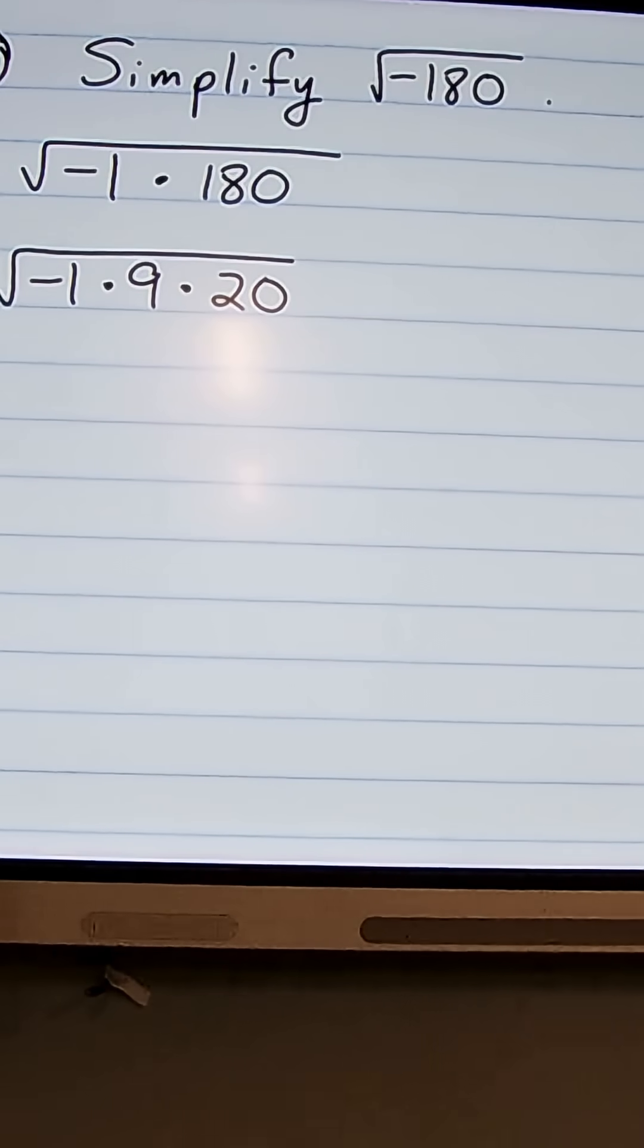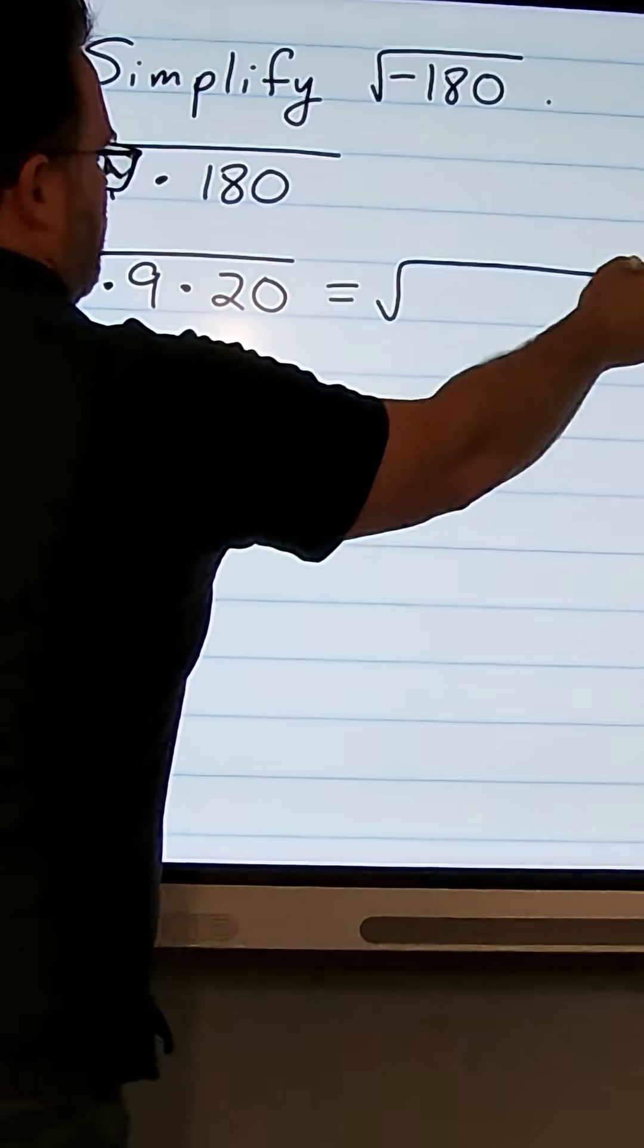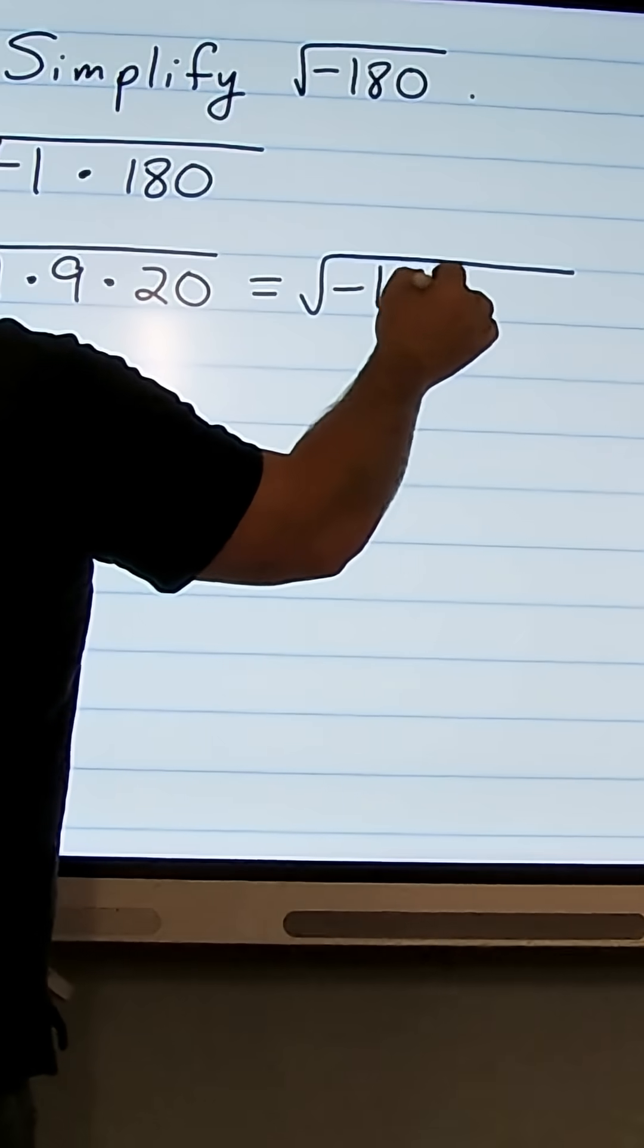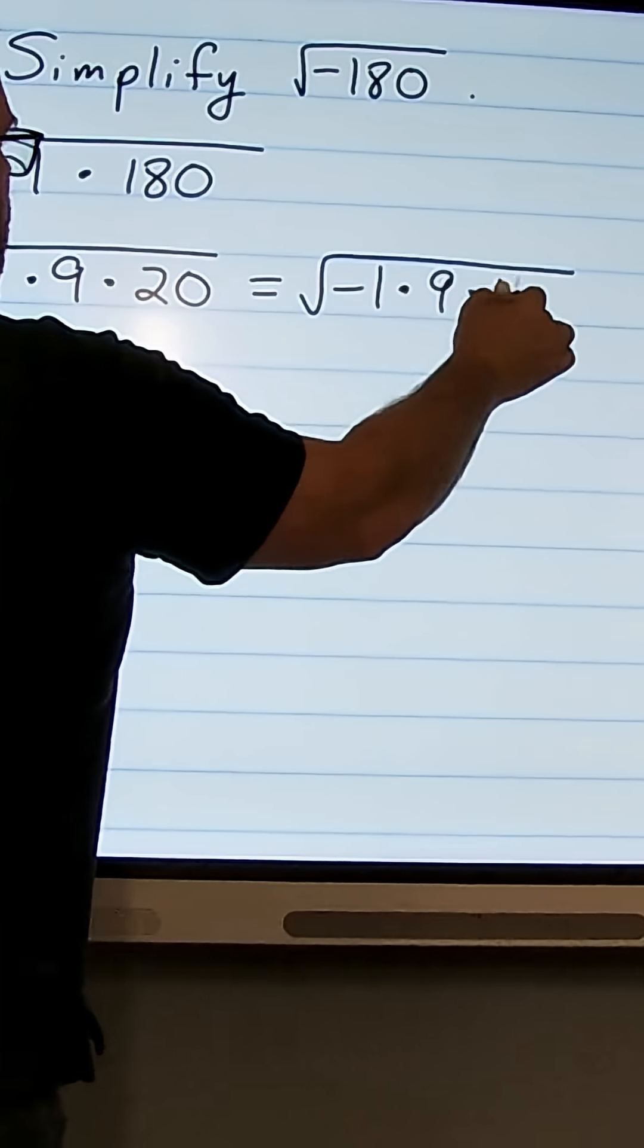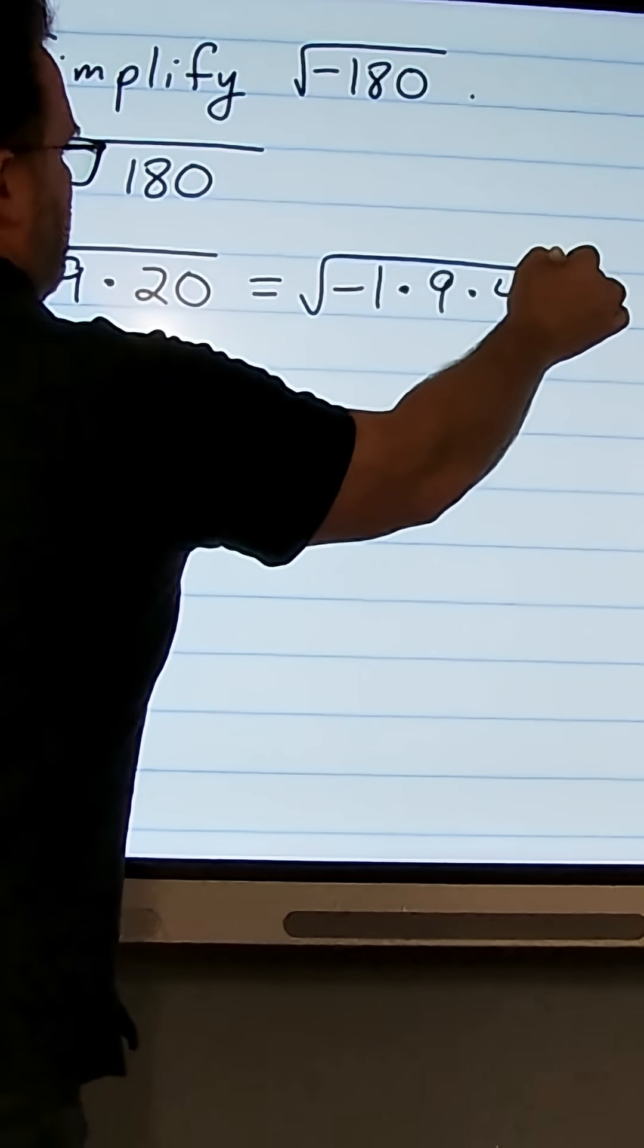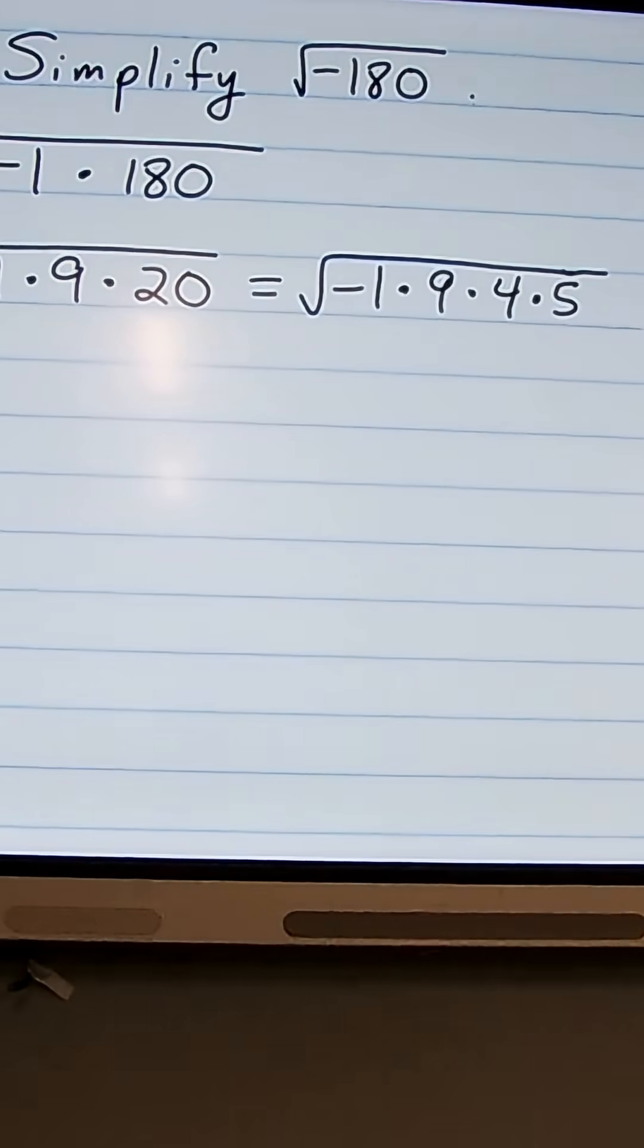20 is 4 times 5, so we can break this apart further. So we have negative 1 times 9 times 4 times 5. And now we can break these apart into separate square roots.